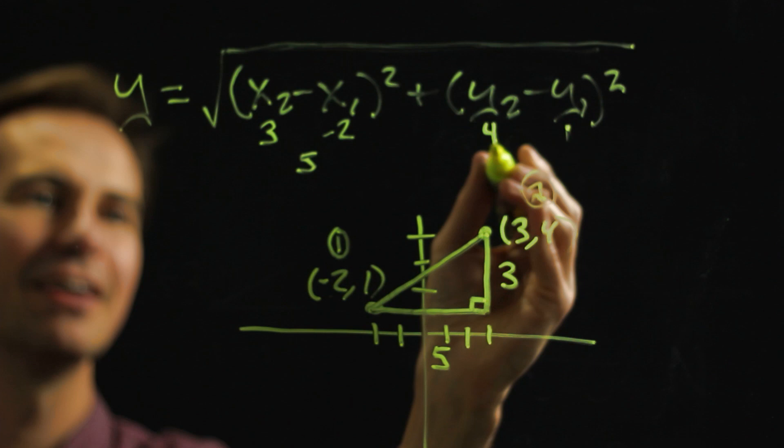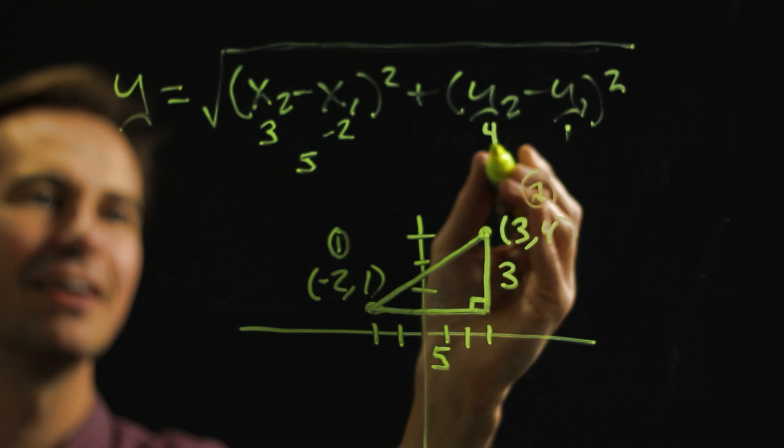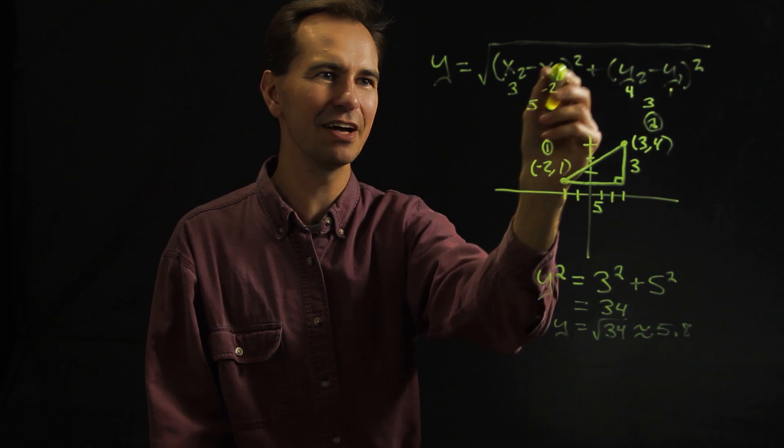So here we'd have three minus negative two, which would be five. And here we would have four minus one, which would be three. So again, we'd have five squared plus three squared, which is exactly what we did here.